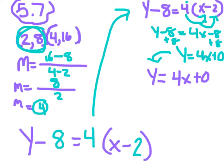Now to make it in standard form, which is ax plus by equals c, we need to subtract 4x on both sides. So we have negative 4x plus y equals 0.